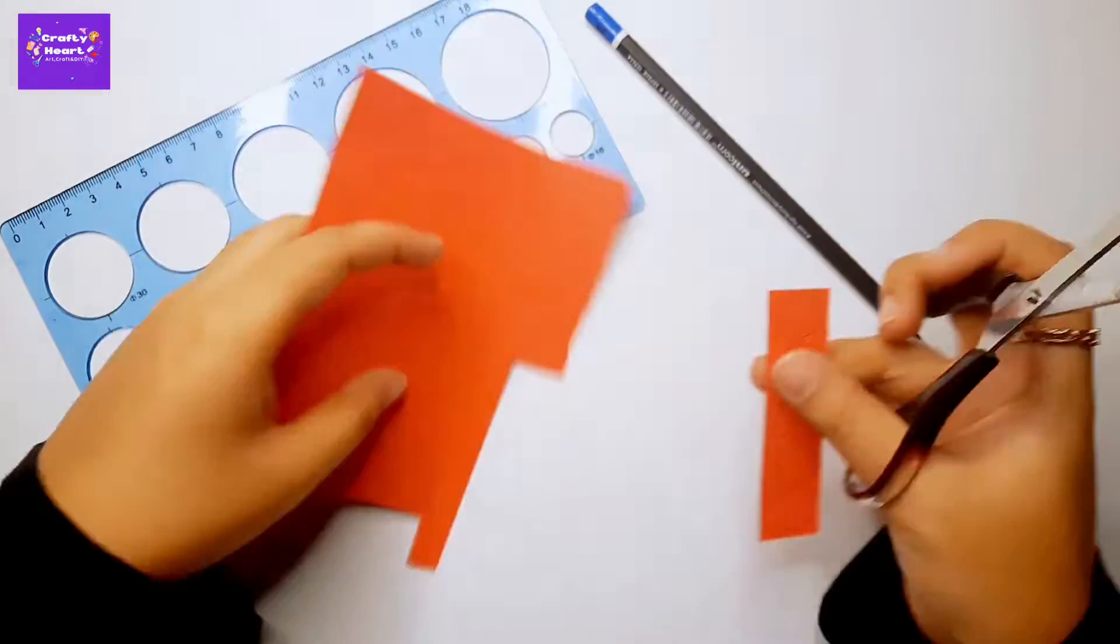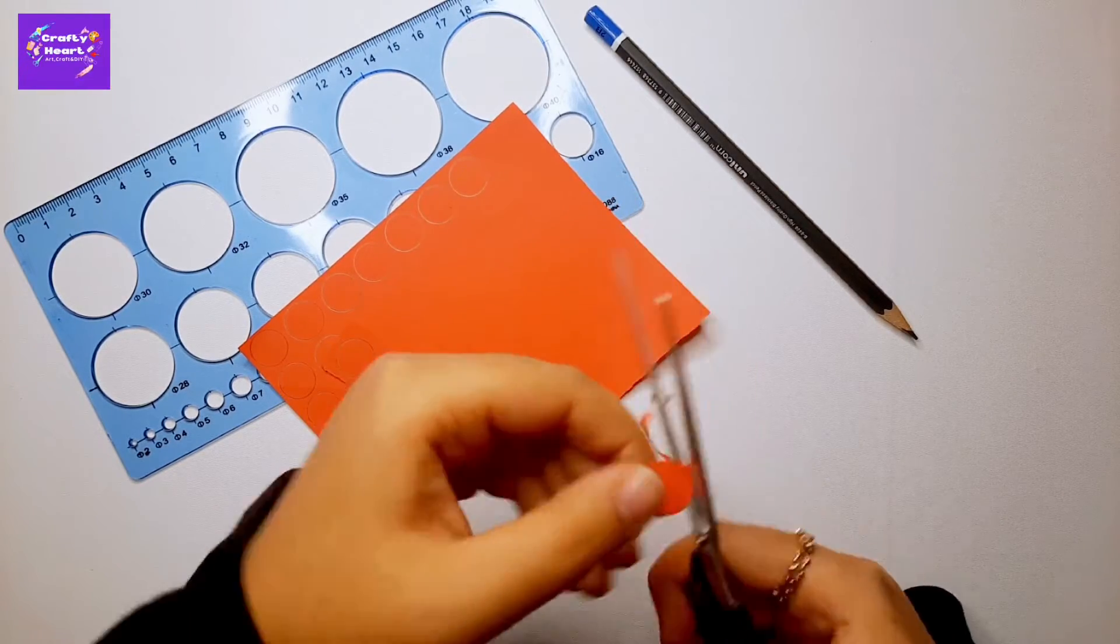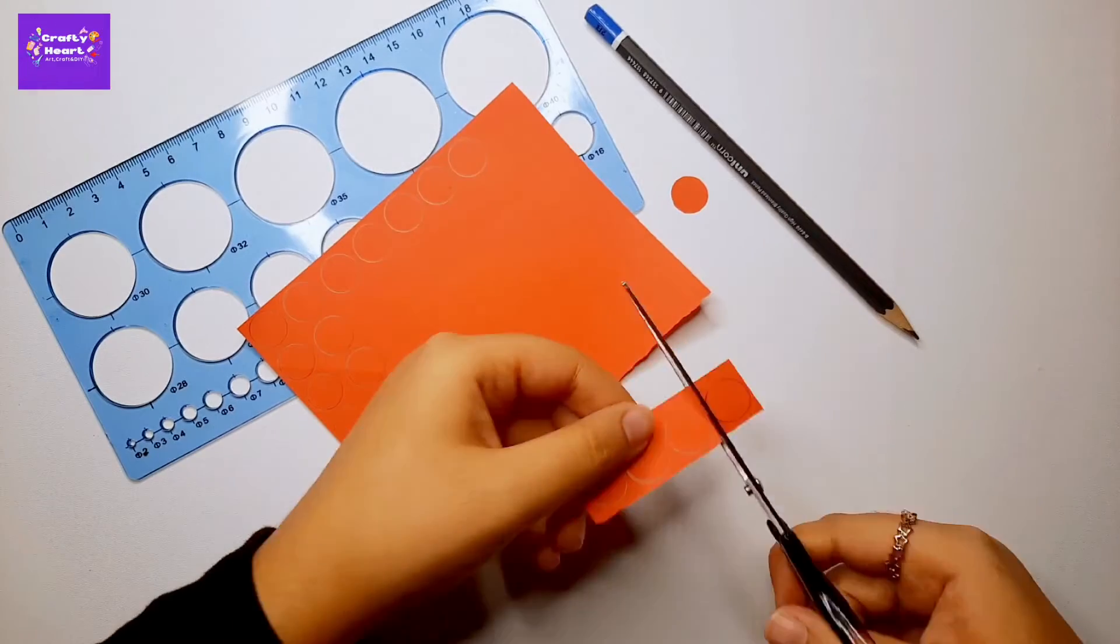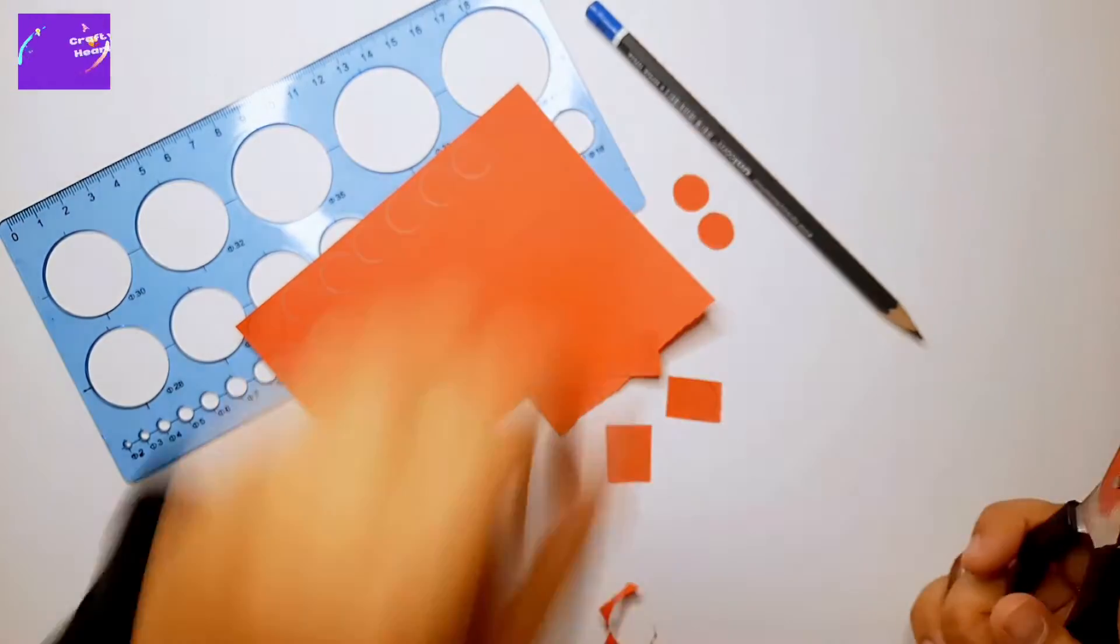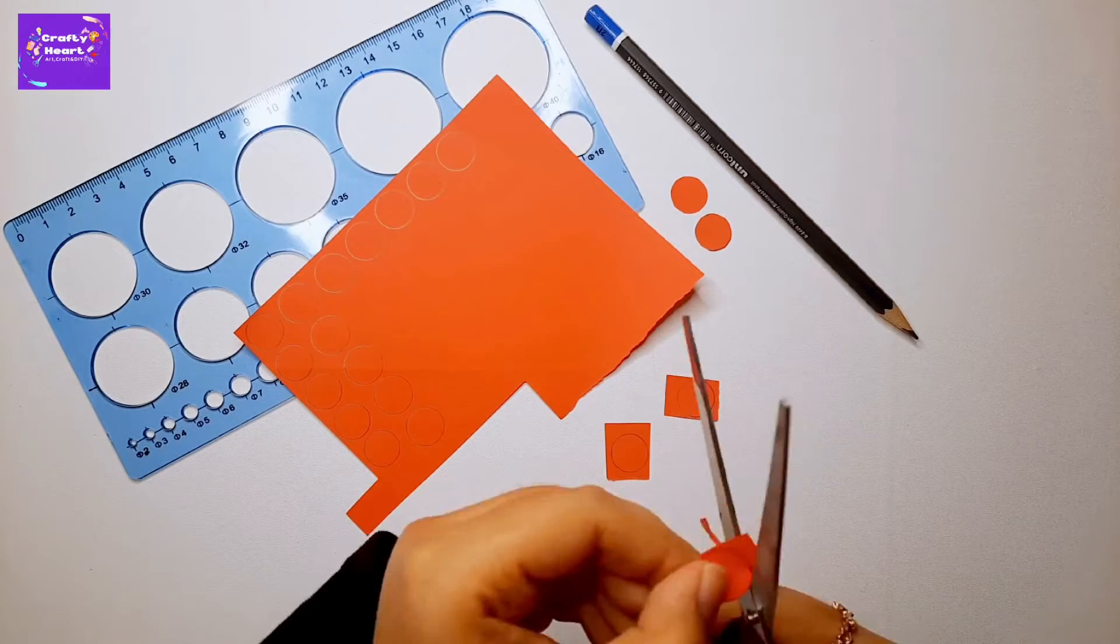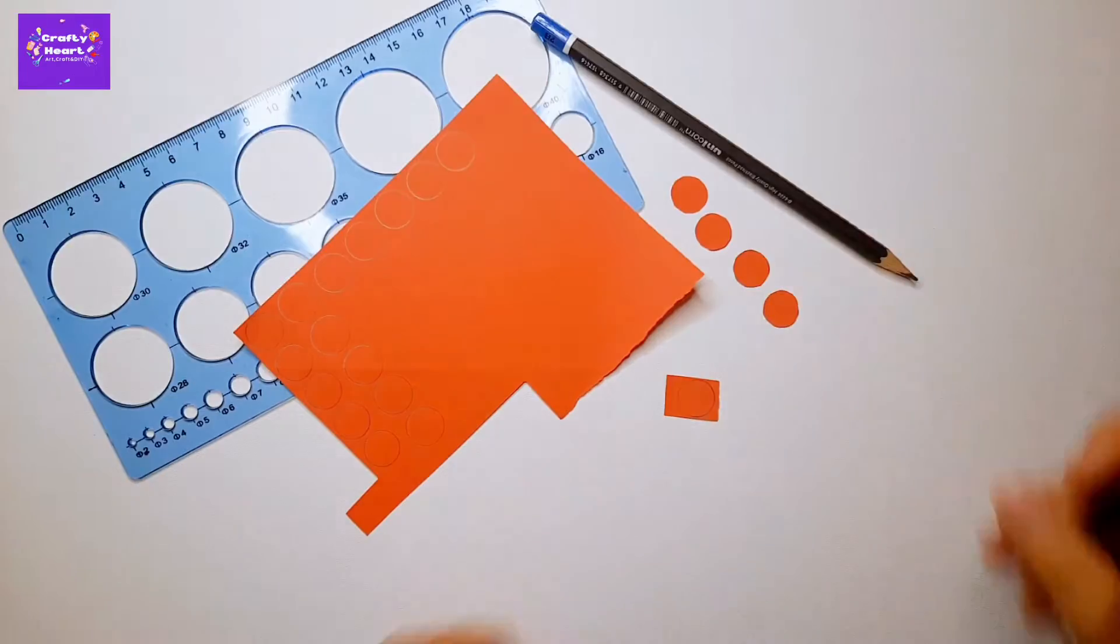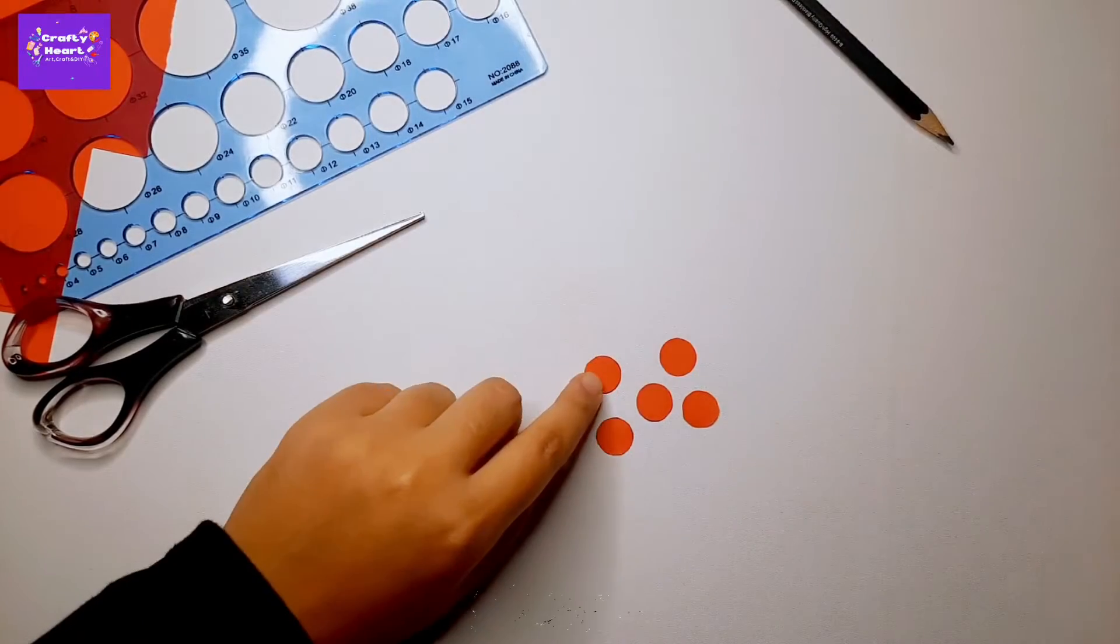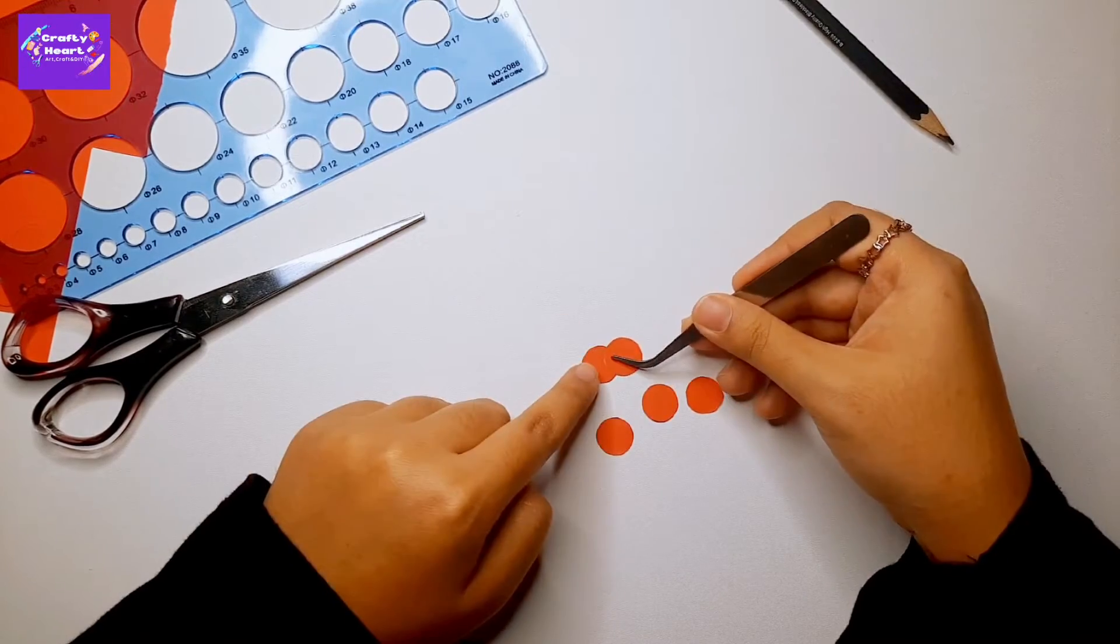And now I'm quickly cutting these circles. Now I am gluing the circles like this in order to make flowers.